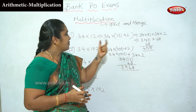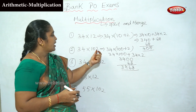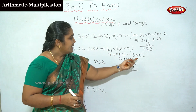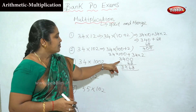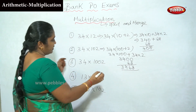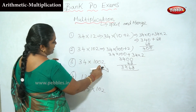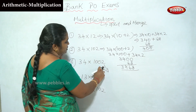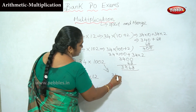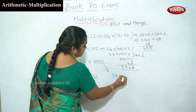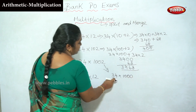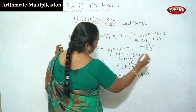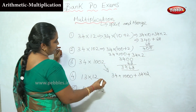Let's go to 34 into 12. Next, 34 into 102, which is 100 plus 2. We add 2. Now, 34 into 1002 — what do we do? Split as 34 into 1000 plus 34 into 2.